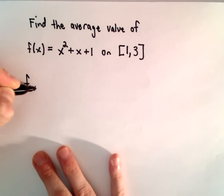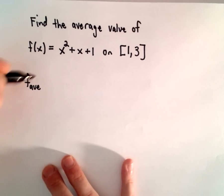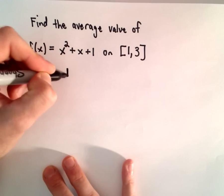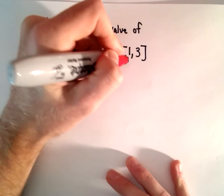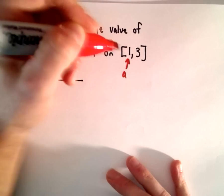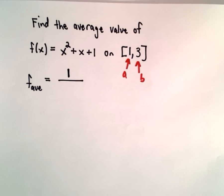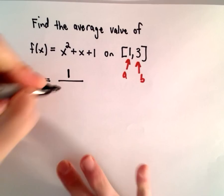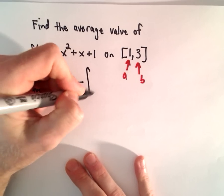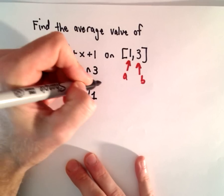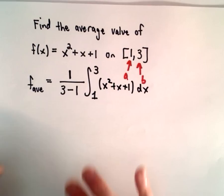A lot of times they just write it abbreviated as f_ave, obviously the average value of f. And what we do is we just take 1 over, well in this case, our a value is going to be 1, our b value is simply going to be 3. So we'll take 1 over the difference, 3 minus 1, and then we integrate from 1 to 3 of our function. So we've got x squared plus x plus 1 dx.